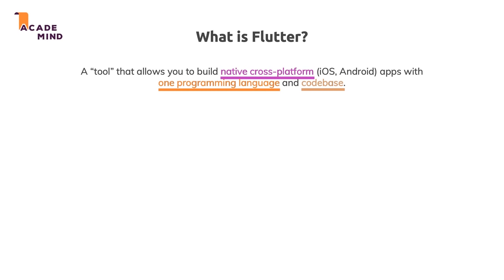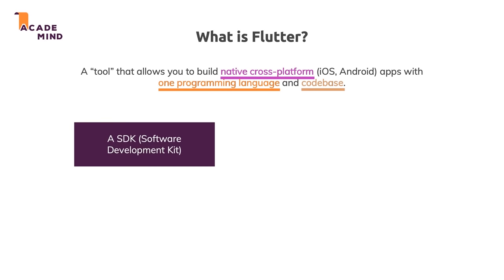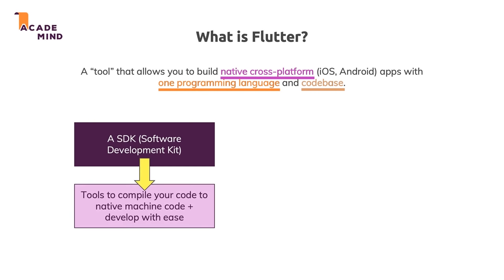Flutter is actually a combination of things. First, it's an SDK — a software development kit — a collection of tools that compiles your code into native machine code for iOS and Android. Because the one programming language Flutter uses doesn't natively run on these platforms, it needs to be compiled to native machine code for each, and that compilation task is part of the Flutter SDK.